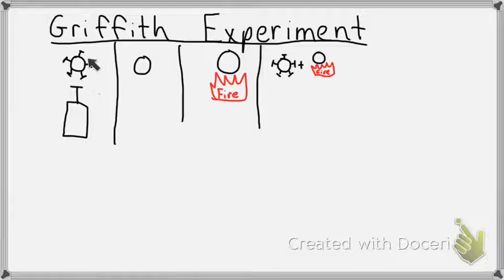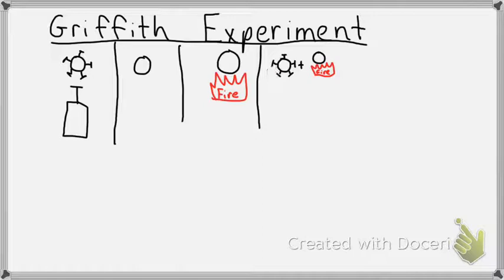Here's our rough bacteria — it's called rough because it's got a little more antigen activity on the outside. Smooth bacteria has no antigens. This is the heat-killed smooth; you can tell because there's fire. And this is the heat-killed smooth plus the rough together.